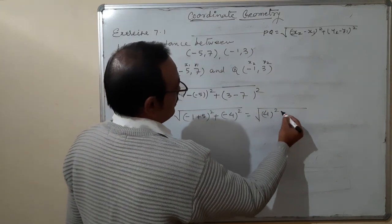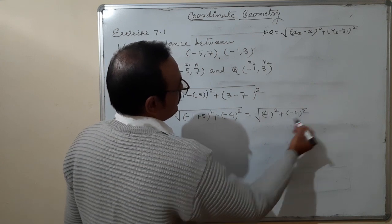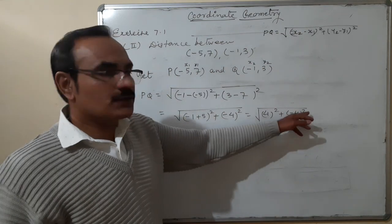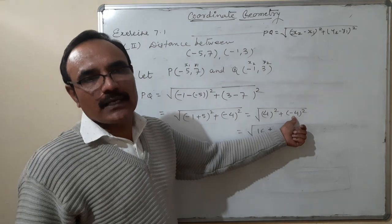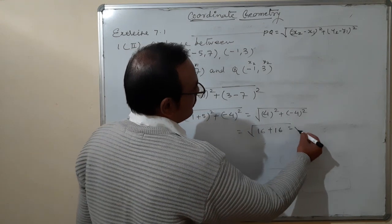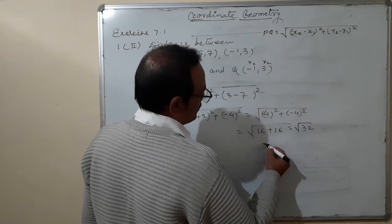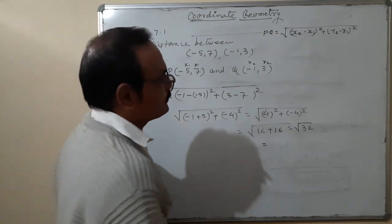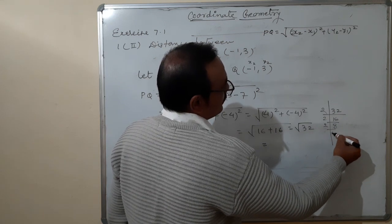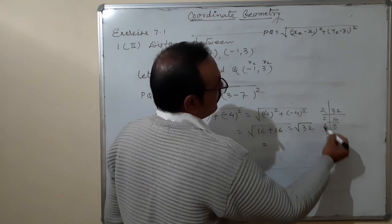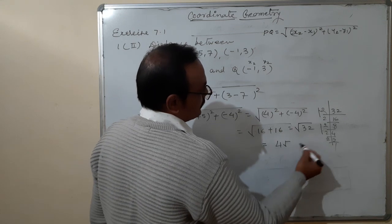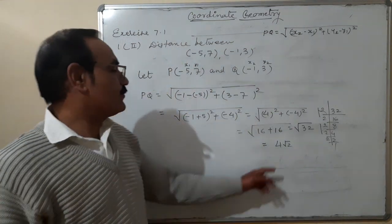So we get 4 squared plus (minus 4) squared, which is 16 plus 16, giving under root 32. The prime factorization of 32 gives two pairs of 2, so we write 4 outside and 2 inside: the distance is 4 under root 2. This is the use of the distance formula.